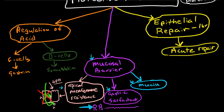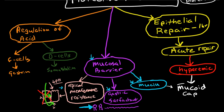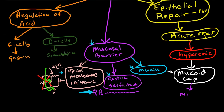What happens then is we have a hyperemic response — vasodilation of arterioles and increased blood flow to the mucosa. This is an important step for the next step: the formation of a mucoid cap. You need this extra blood flow to produce the fluid to create a thick layer of mucus. This is not typical mucus — it's very, very thick and makes a thick protective layer. Then we have re-migration: migration of epithelial cells from deep in the gastric pits back to the surface.